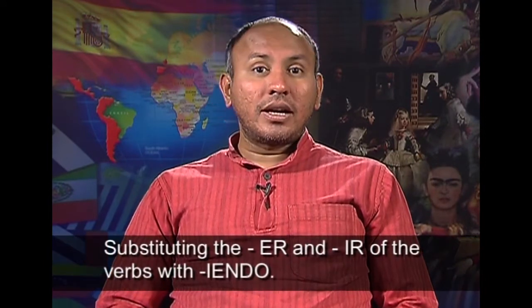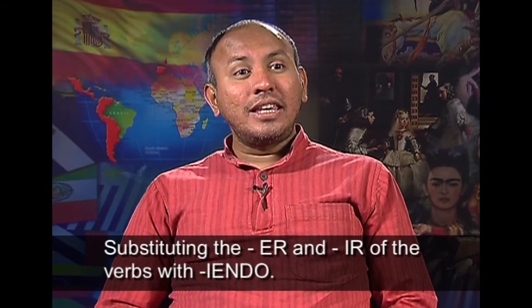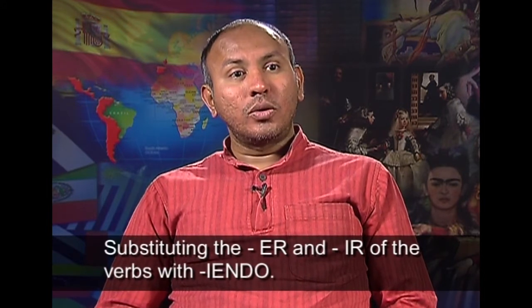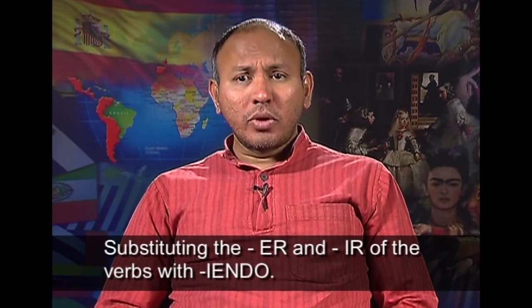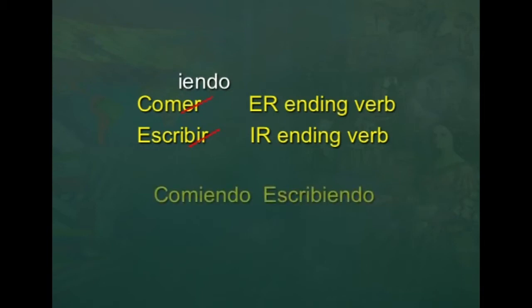When it comes to -ER or -IR ending verbs, we conjugate them by substituting the -er and -ir of the verbs with -iendo. Por ejemplo, comer is an -ER ending verb and escribir an -IR ending verb. We add -iendo to both verbs. Therefore, they become comiendo and escribiendo.